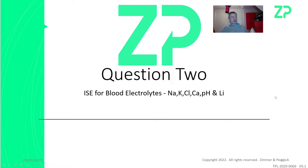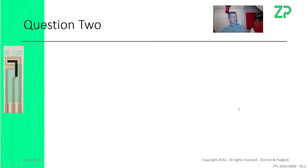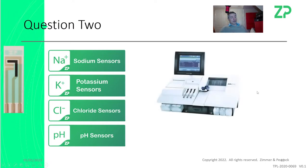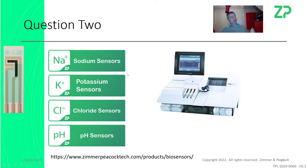Question two: ion-selective electrodes for blood electrolytes. We do have sodium, potassium, chloride, calcium, and pH solid-state ion-selective electrodes. I'll put all links underneath the video. These kind of electrodes are used in real products — Radiometer uses them, though they manufacture their own. They're a multi-billion dollar business.